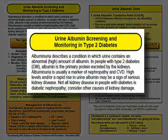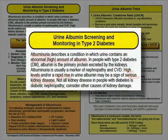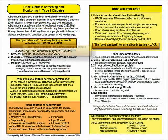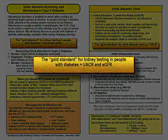Albuminuria describes a condition in which a patient's urine contains an abnormal amount of albumin. High levels and/or a rapid rise in urine albumin may be a sign of serious kidney disease. There are two tests which are the gold standard for testing for kidney disease in people with diabetes.